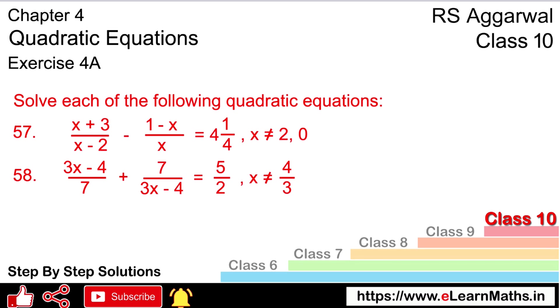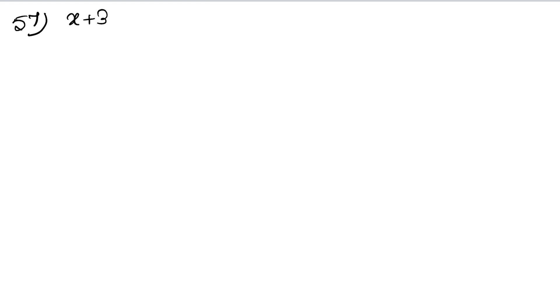Let's do question number 57 of exercise 4a on quadratic equations. We need to solve the quadratic equation: (x+3)/(x-2) minus 1/x equals 4 and 1/4, that is 17/4.